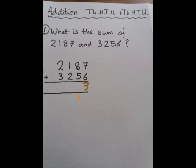So here we go, 7 and 6 is 13, so put the 3 and don't forget the carrying digit.